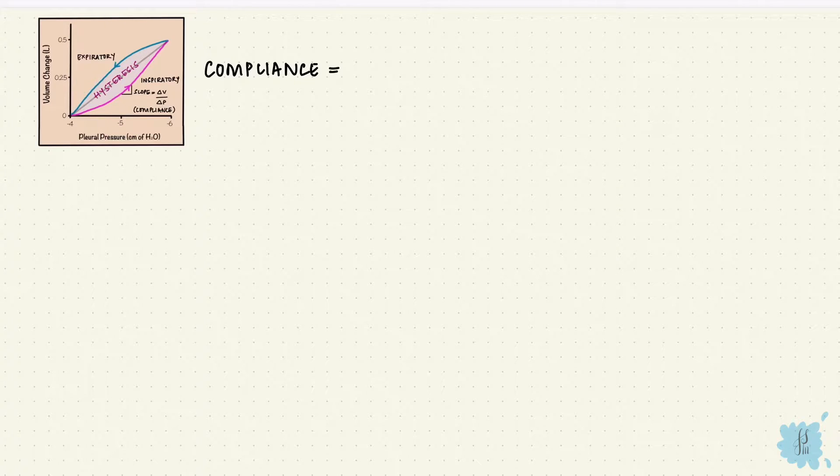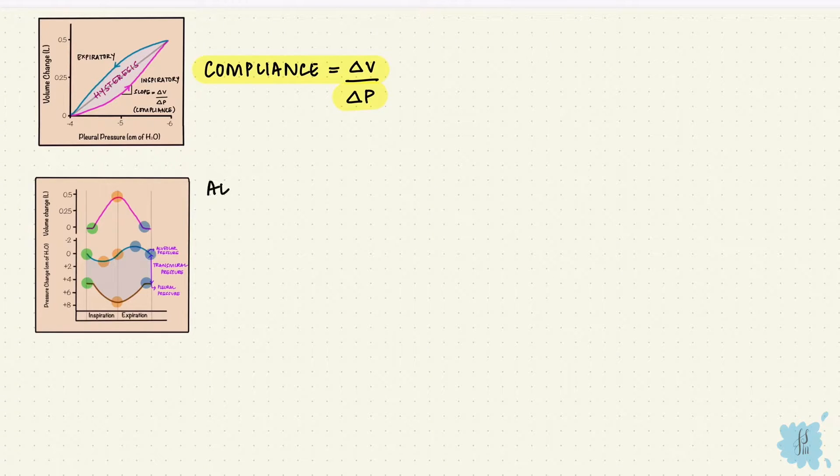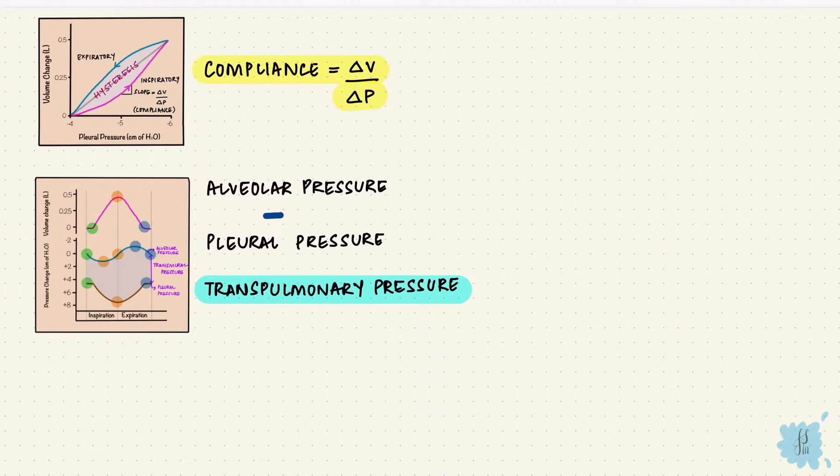Lung compliance is the change in volume over the change in pressure. In respiratory physiology there are three kinds of pressures: alveolar pressure, pleural pressure, and transpulmonary pressure. Transpulmonary pressure is the difference between alveolar and pleural pressure.